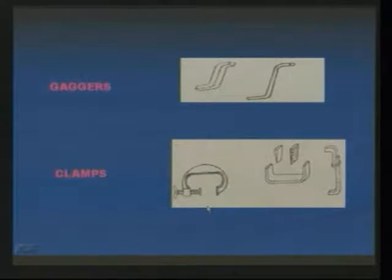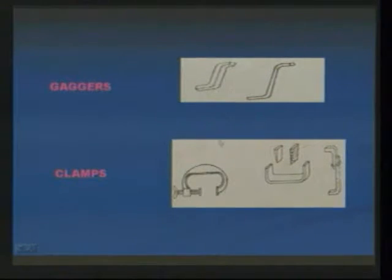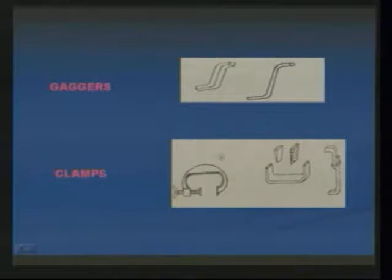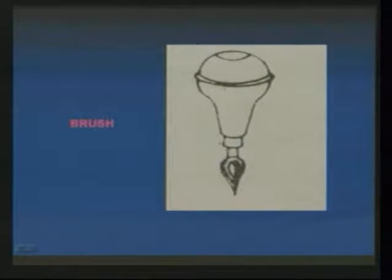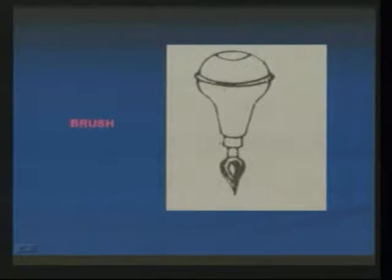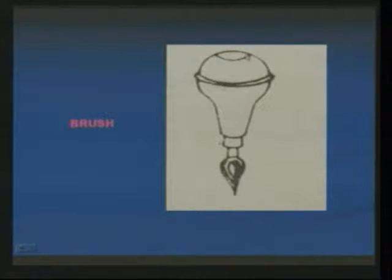The gaggers are shaped as shown in the figure. This one is also the clamps, which is one of the instruments used for production of the molds. The brush is used for cleaning of the mold cavity after preparing the complete mold — when the pattern is removed, some molding sand will be withdrawn.